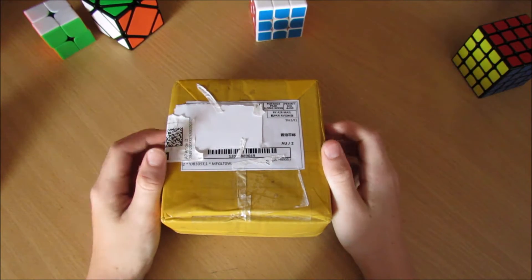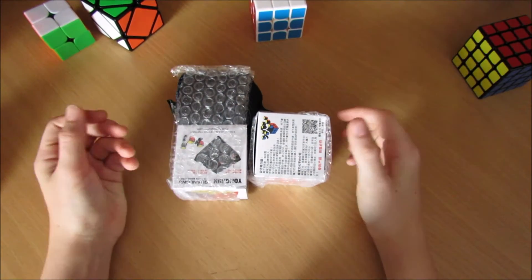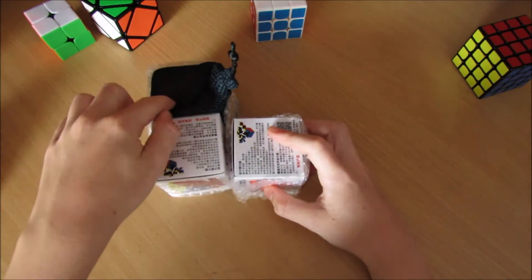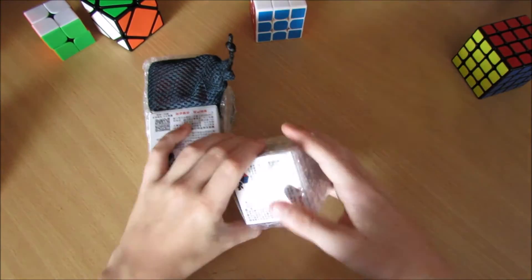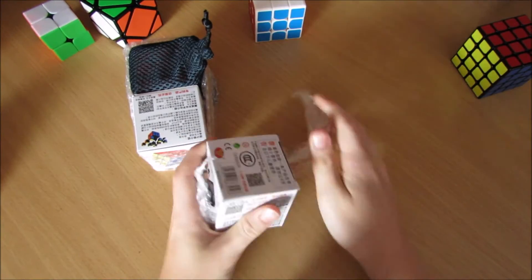Alright, so let's unbox this package. Here we are. I have 3 cubes here. We've got a Chi-Yi Thunderclap and 2 Gua Longs, but they're not any ordinary Gua Longs, so let's get into this one first.